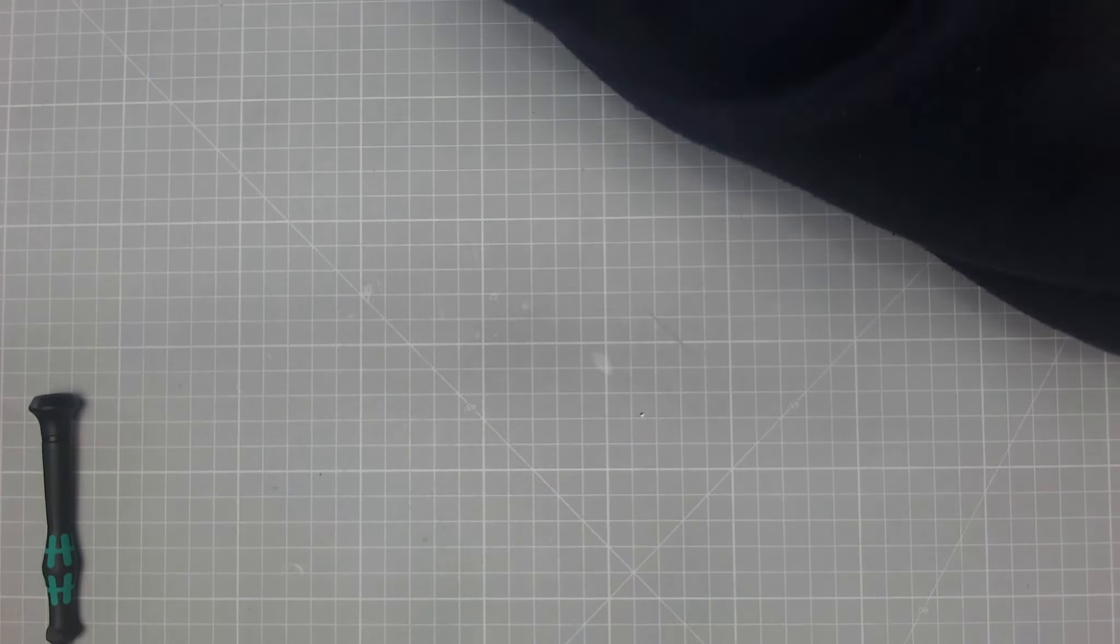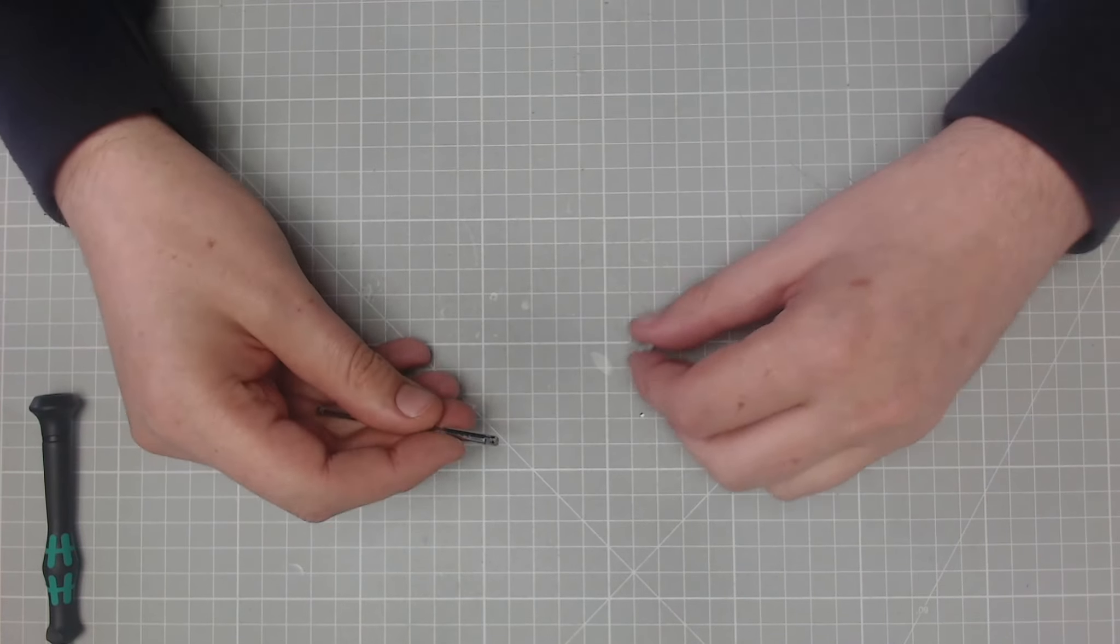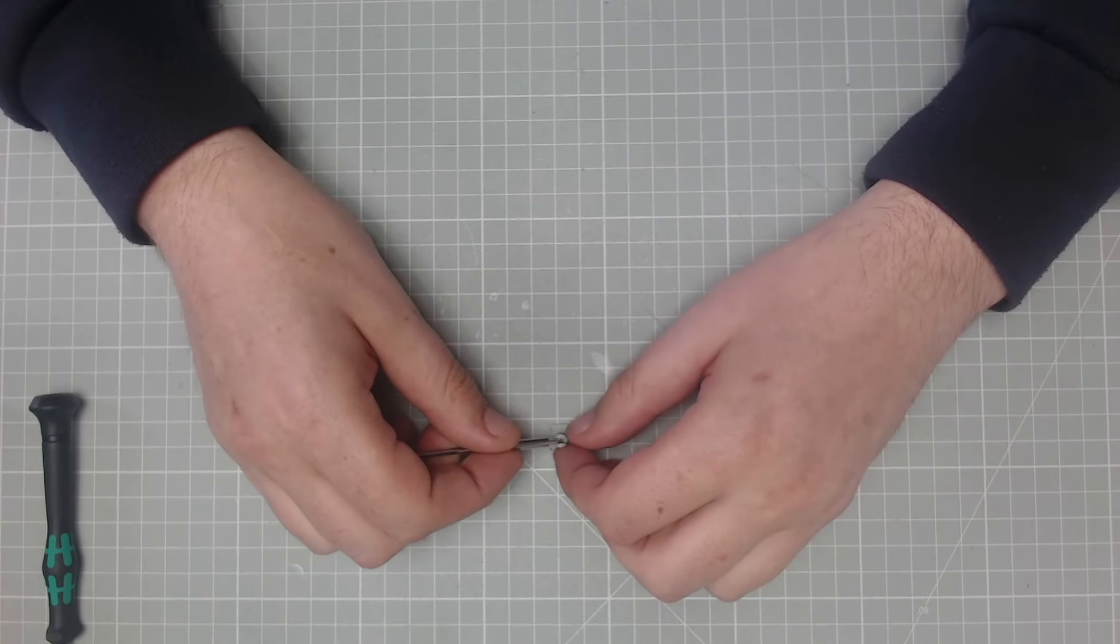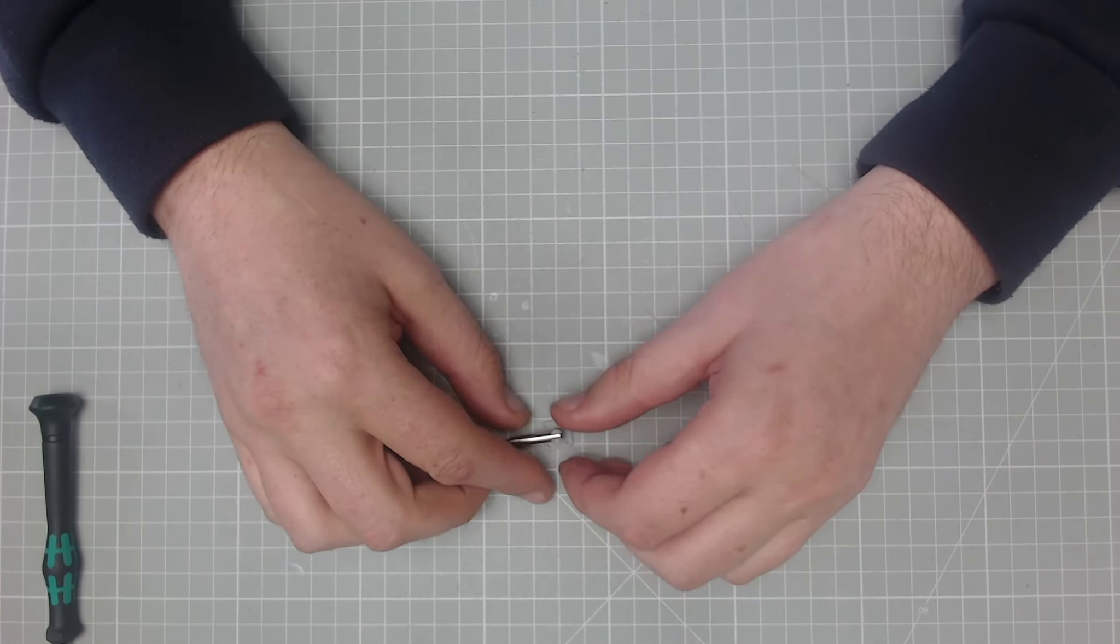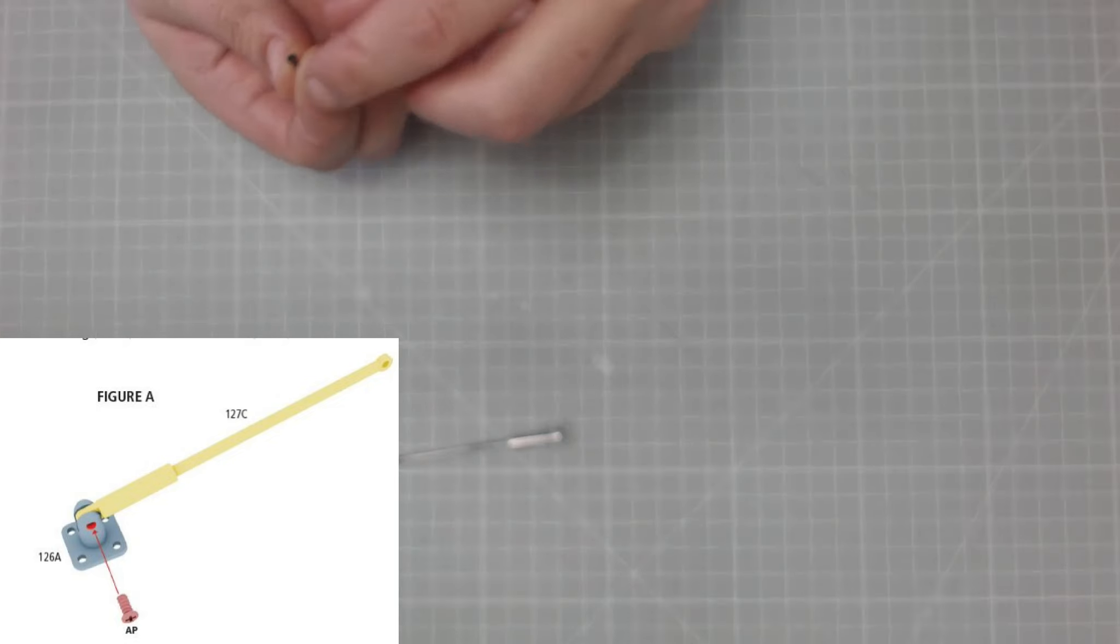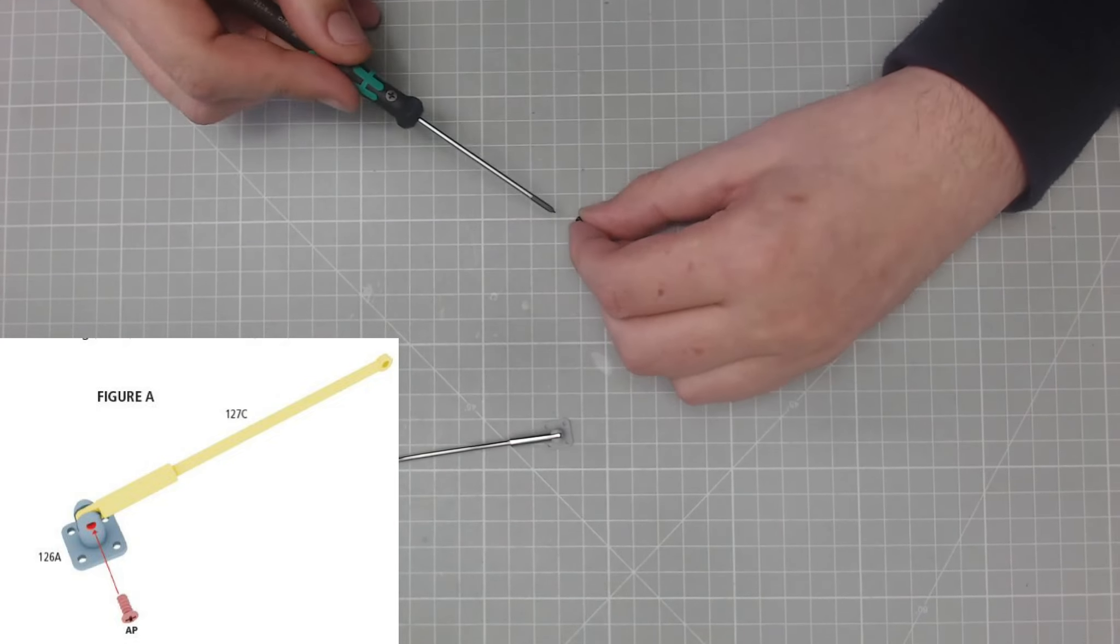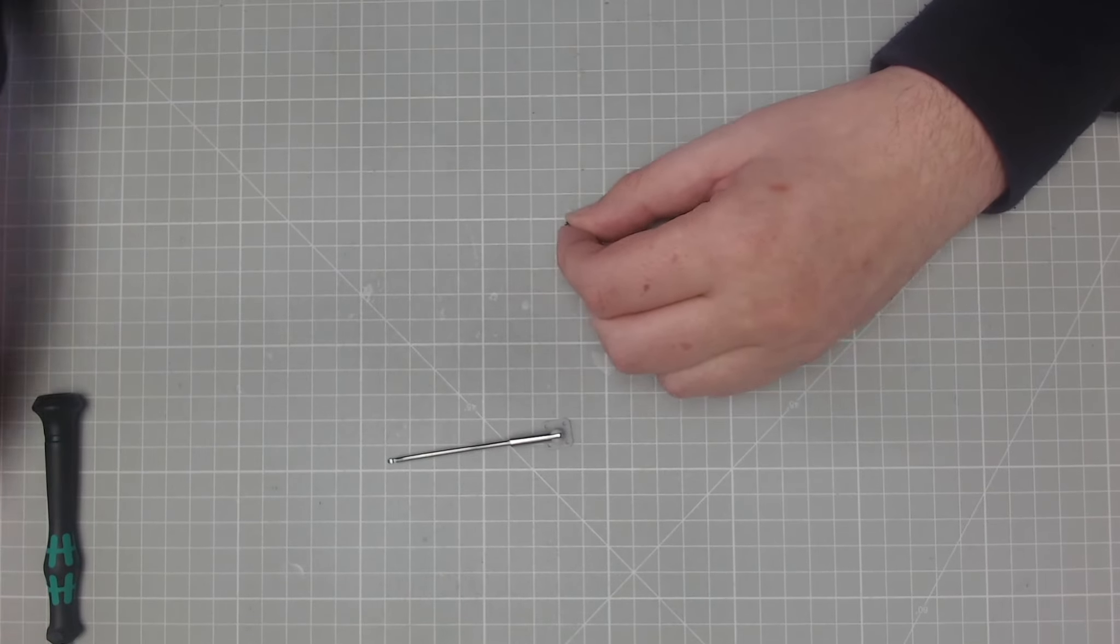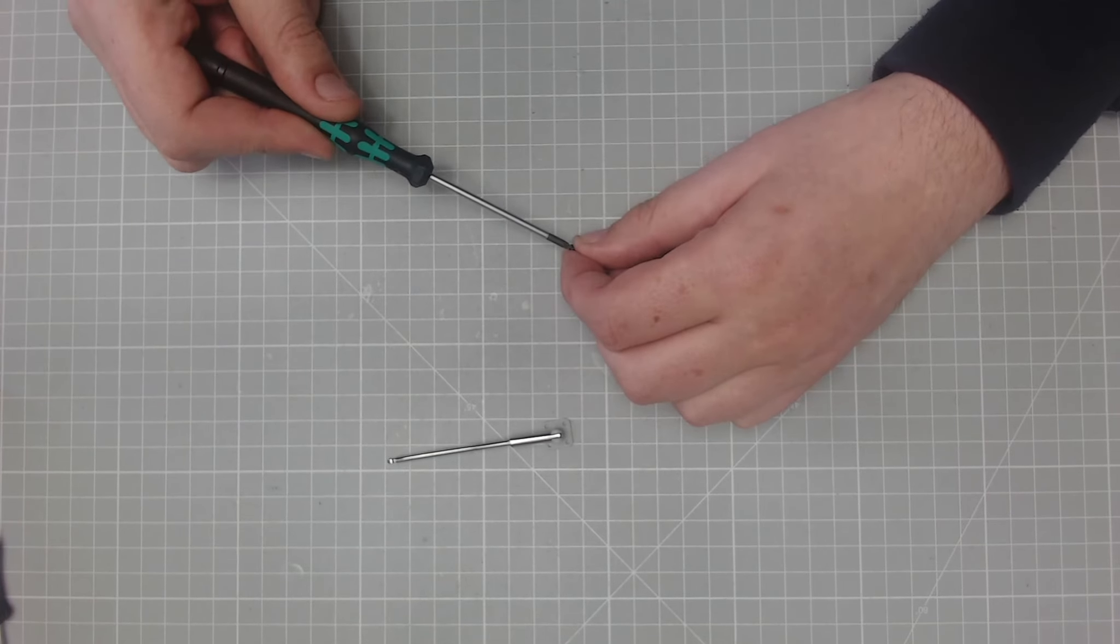Okay. Next what I need to do, we're just going to put the stretcher to one side because we need this part here and this part here. The thicker end of this we need to bob into there, and then we need to screw that in with an AP screw. I'll use the bigger screwdriver for that one.